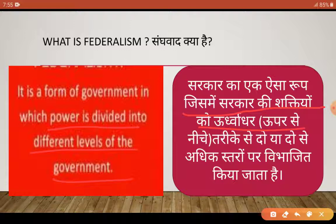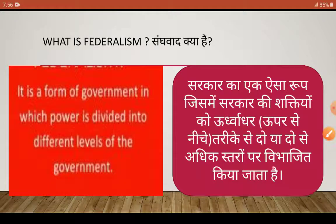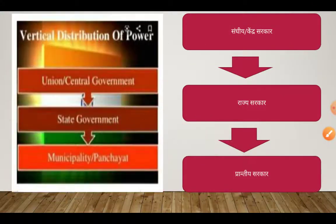सत्ता की साझेदारी यानि power को distribute करने के अलग-अलग तरीके होते हैं, और उन्हीं तरीकों में से एक है ये vertical manner या उर्ध्वाधर वितरण। अब Federalism यानि कि vertical जो method है, वो क्या होता है, उसको देख लेते हैं — here is vertical distribution of power।